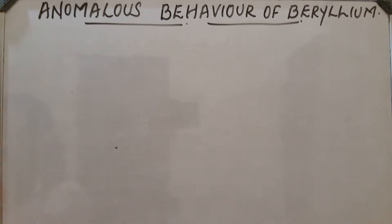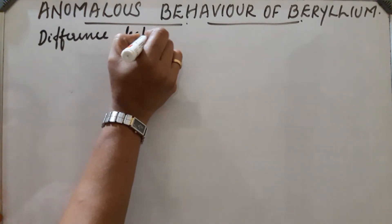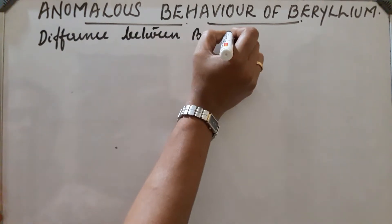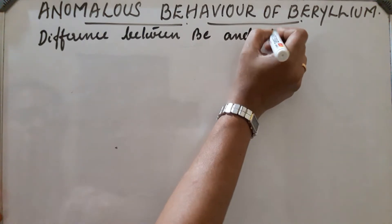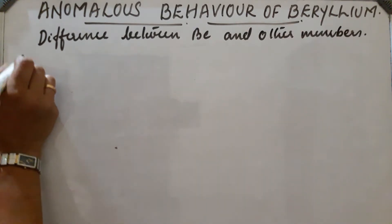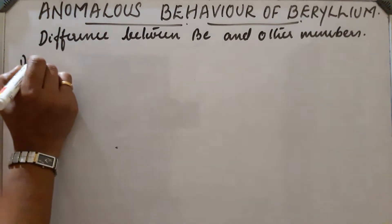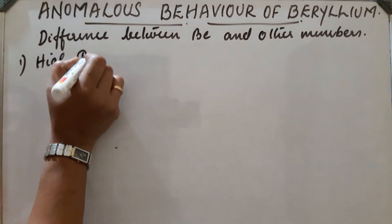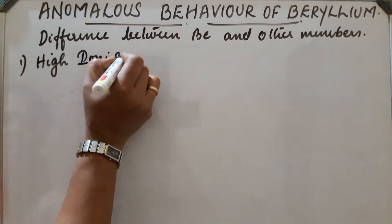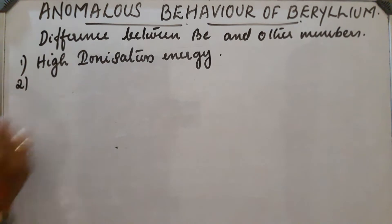First difference between beryllium and other members of Group 2: beryllium has exceptionally small atomic and ionic sizes, so it has high ionization energy because of its small size.